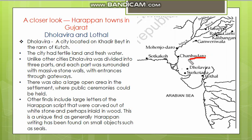If you look at one city, you will find Gujarat has important Harappan sites. The names include Lothal, Mantawn, and Dholavira — also called Khadrbat. Dholavira is an important Harappan site in Gujarat.